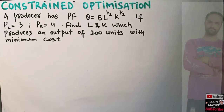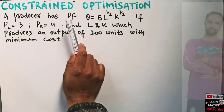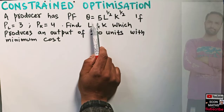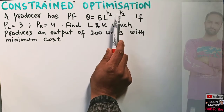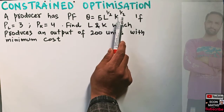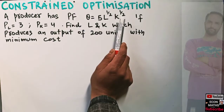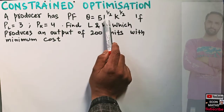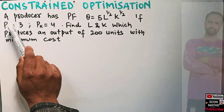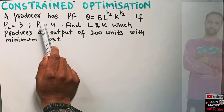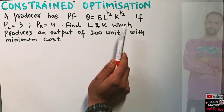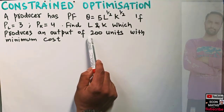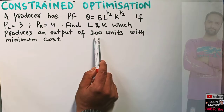Let us solve a question on cost minimization. The question is: a producer has a production function Q = 5L^(1/2) × K^(1/2), where Q is the output and L and K are the units of labor and capital. The price of labor is 3 and the price of capital is 4. Find the units of labor and capital which produces an output of 200 units with minimum cost.